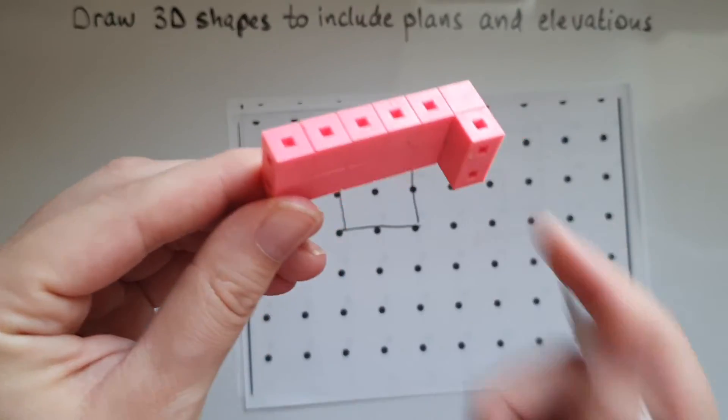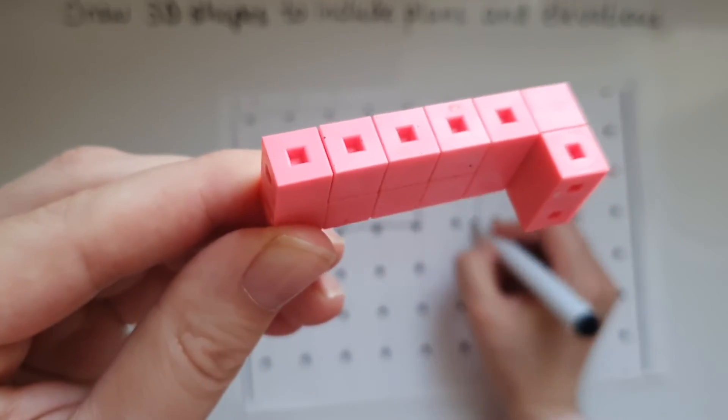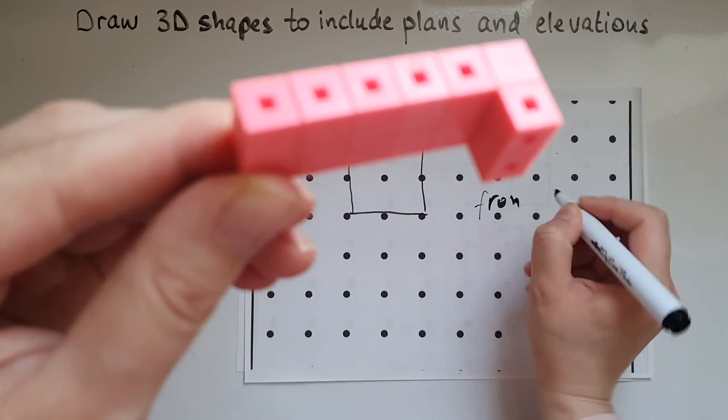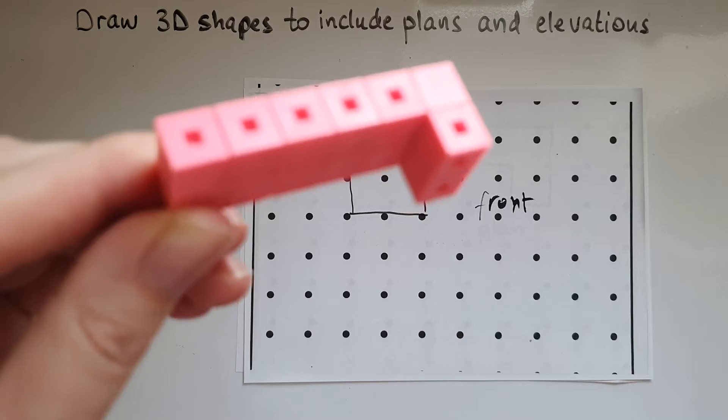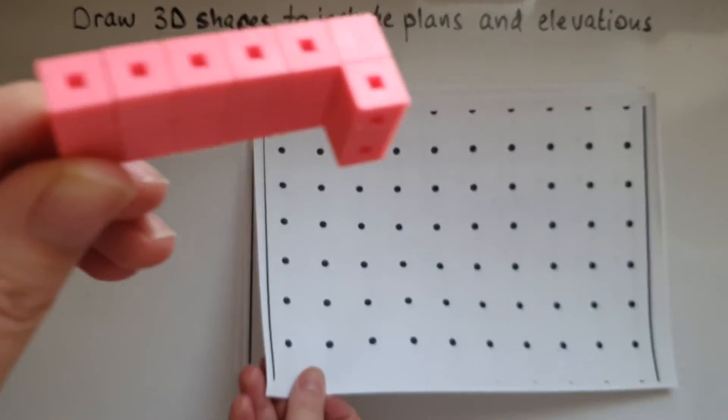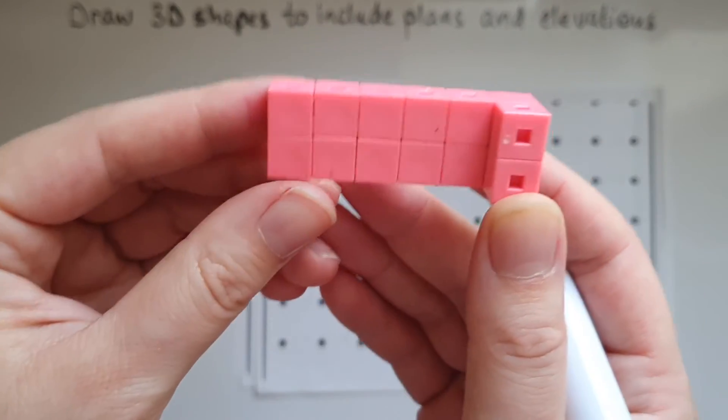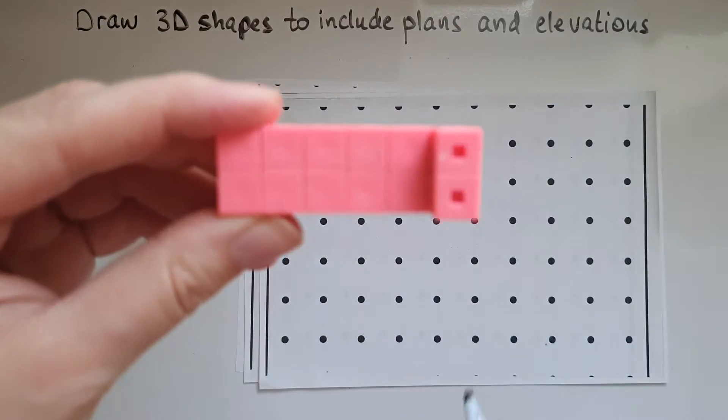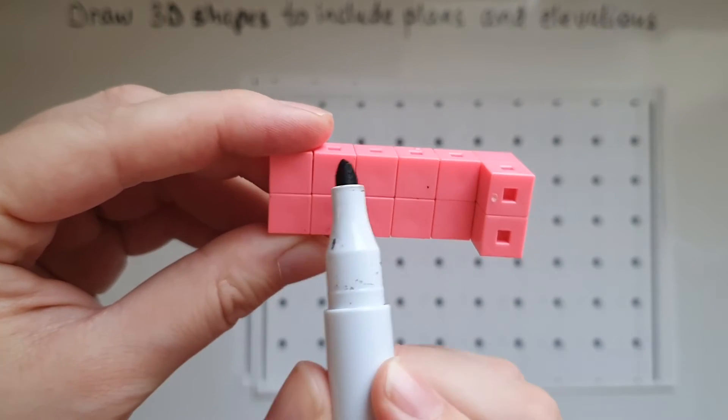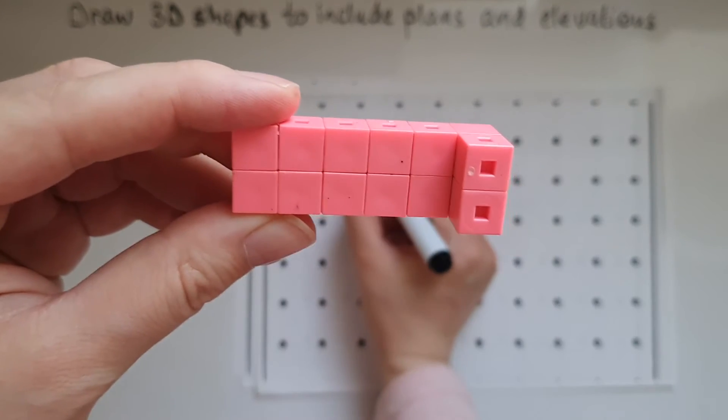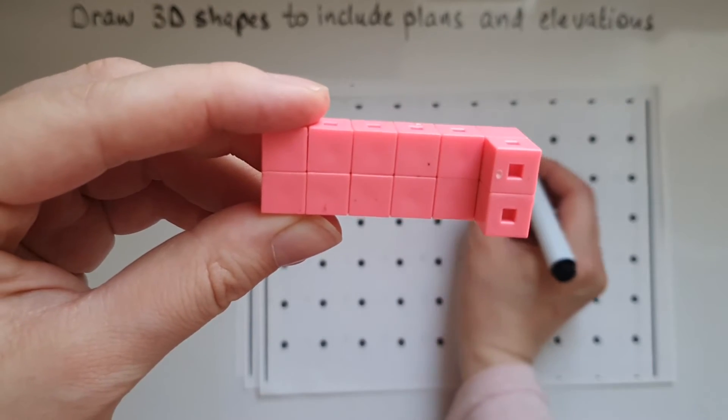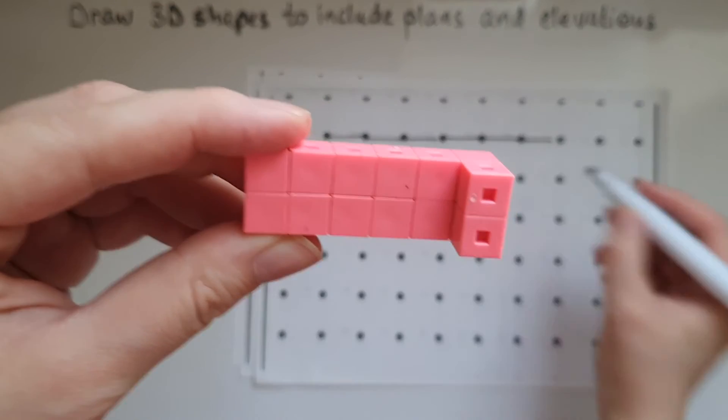And now with the side elevation. So if you turn it this way, this is what you'll be able to see. Six units across and two units down.